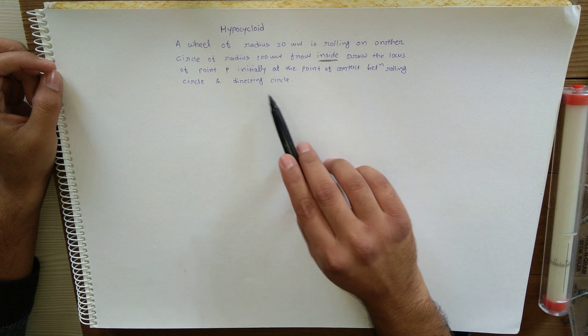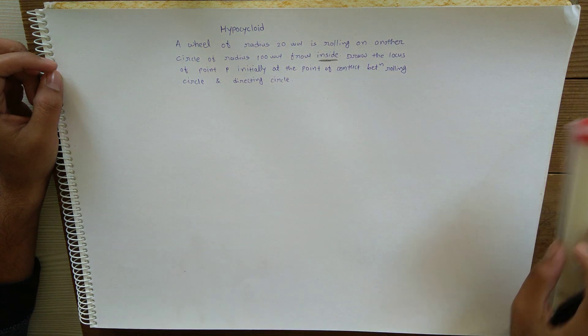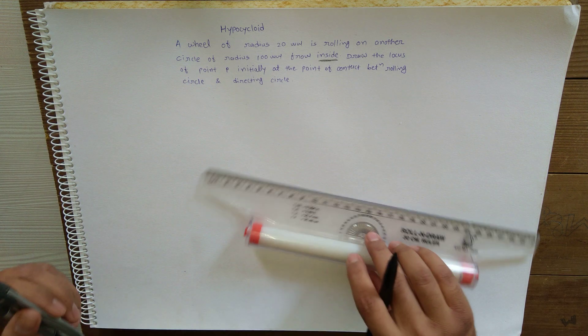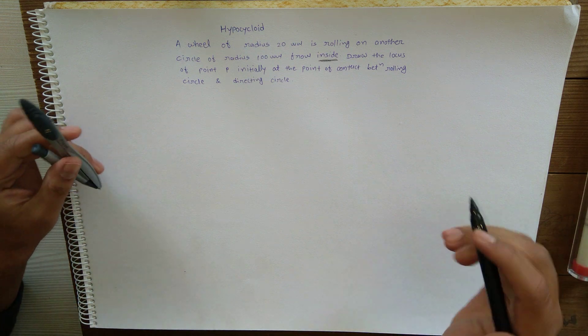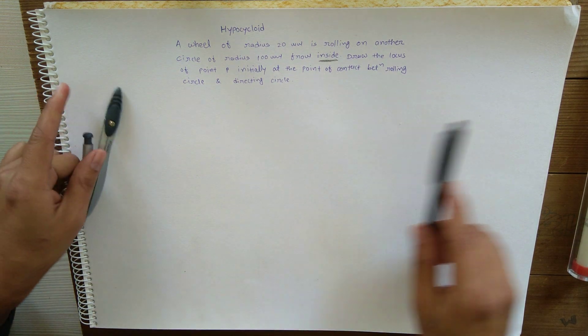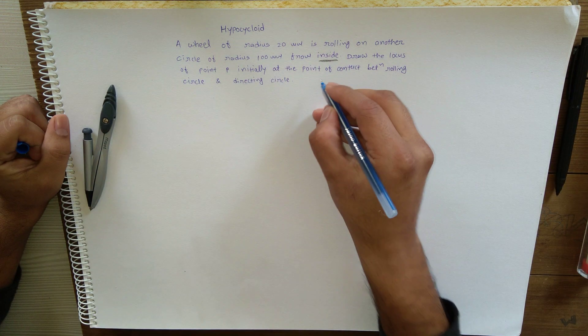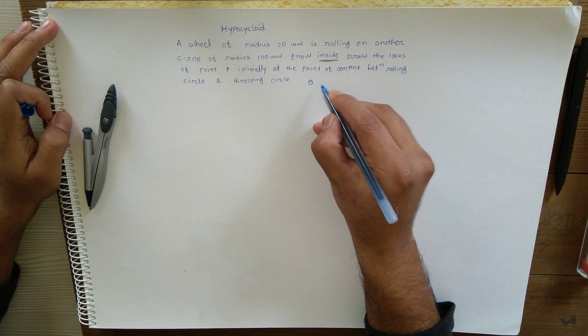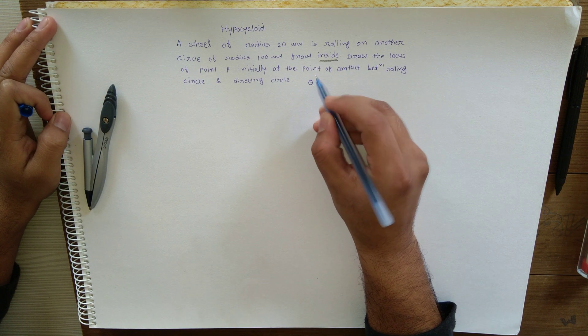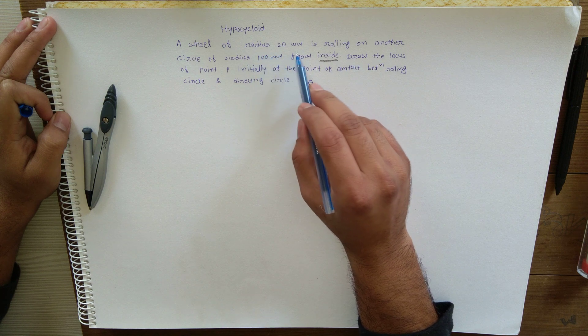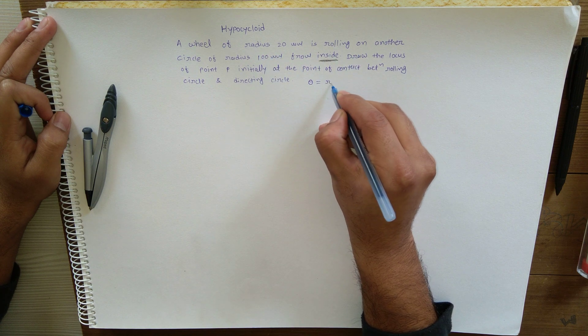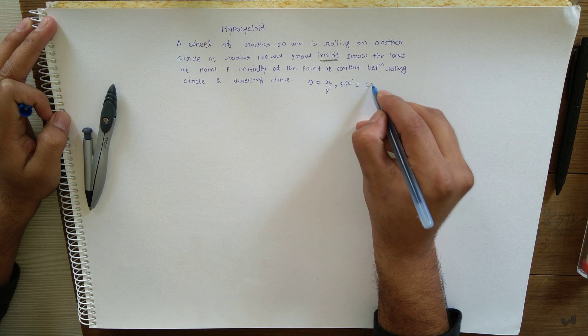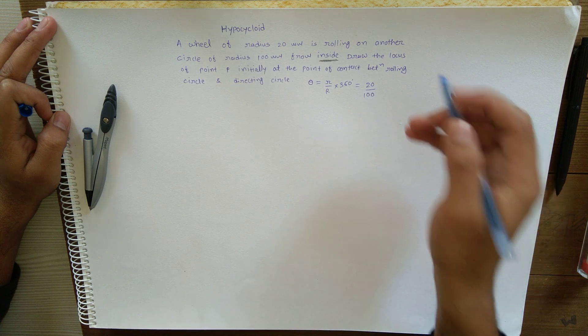If you have watched my earlier videos of epicycloid and cycloid or the introduction video, I told you that in problems of epicycloid or hypocycloid, first we need to calculate theta, the angle which is required for one complete rotation of this smaller circle. Theta is small r upon capital R into 360 degrees.